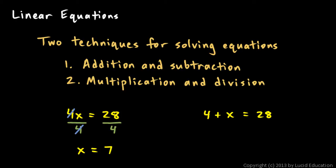The point I'm making here is that in these examples, x and 4 were multiplied, so we had to divide to get rid of the 4.